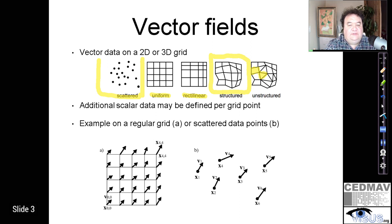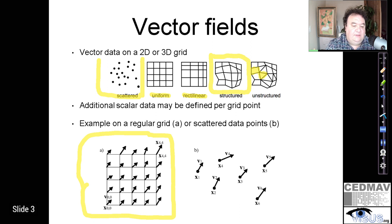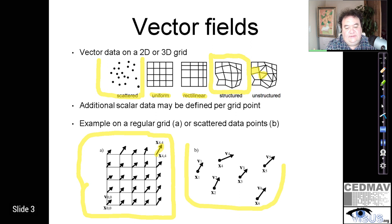On every vertex of those meshes, in addition to the vector field itself, there can be stored additional scalar fields and other information related to the data. In the image on the bottom left, you see an example of a vector field on a uniform grid, where at every point we use an arrow as a representation of the two-dimensional vector with a length and direction. The starting point is the location where the vector is sampled. On the image on the right, we have a scattered set of points each with a different vector representation.